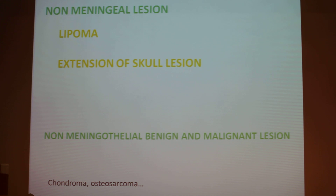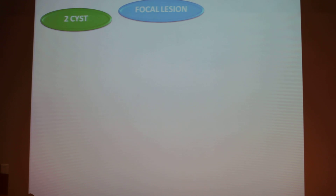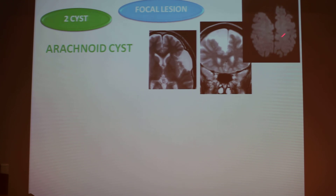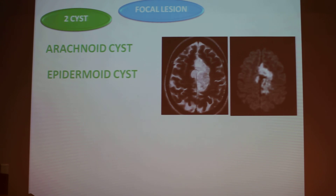Non-meningeal lesions include chondroma and other extra-axial lesions. When the focal lesion is cystic, the most frequent is the arachnoid cyst, which can thin the vault and has the same signal as CSF on all sequences. The epidermoid cyst has the same signal as CSF on T1 and T2, but on diffusion imaging, because the liquid is very thick, there is a high diffusion signal distinguishing it from the arachnoid cyst.